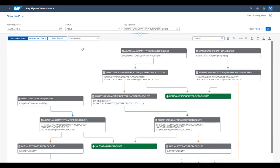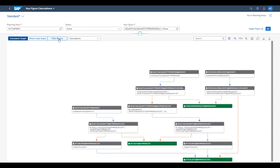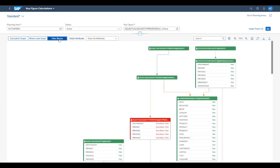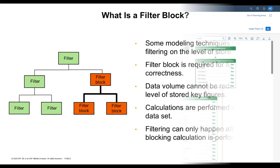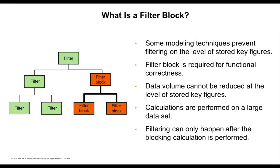Everything seems to be fine so far. Then she switches to the Filter Blocks tab to see if there are any calculations that raise filter blocks, as well as to find attributes that can be used for effective filtering in the Planning View. A filter block is when some modelling techniques prevent filtering on the level of stored key figures by imposing filter blocks on certain attributes. A filter block is required for these calculations so that they provide correct results. For example, in the case of cross-period calculations, the filtering of time attributes is not allowed, as the calculation uses values from several time periods. This also means that data volume cannot be reduced at the level of stored key figures.